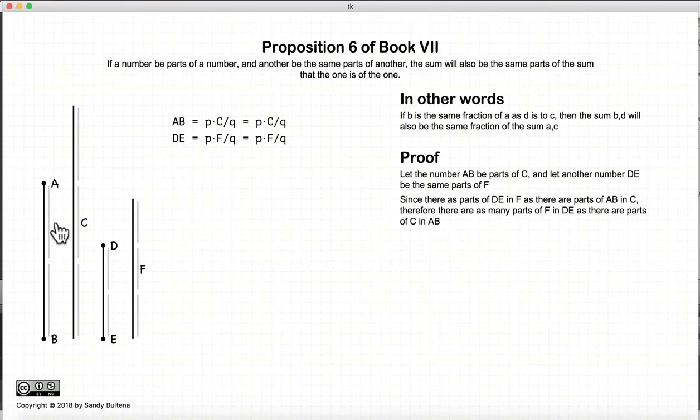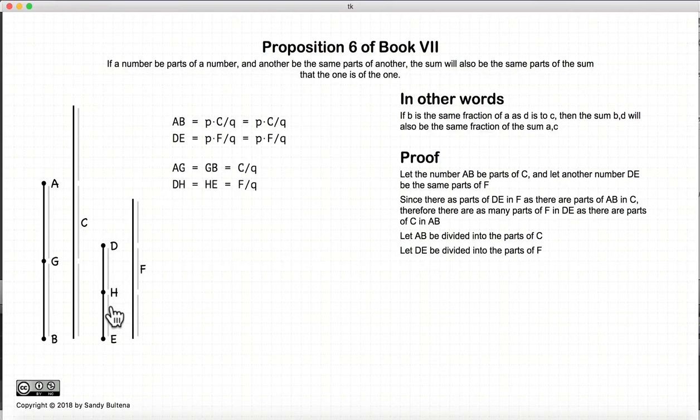So since there are the same number of parts of c in ab as there are of parts f in de, in other words, we have two parts here, and we have two parts here. Now it doesn't have to be two, it can be any number of parts, but in this example it's two. So that's what Euclid is trying to focus on, is that the number of parts here is the same as the number of parts in here.